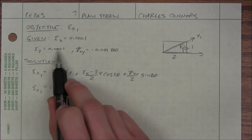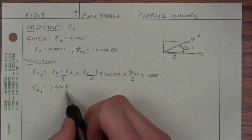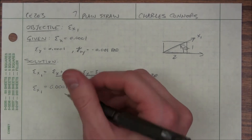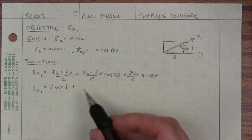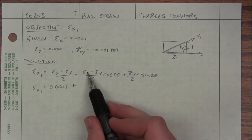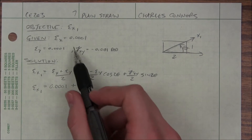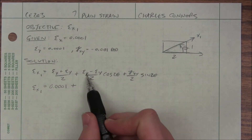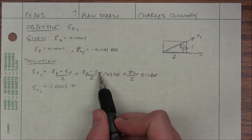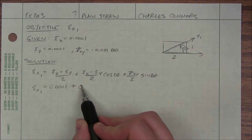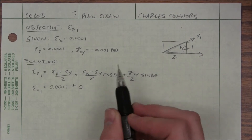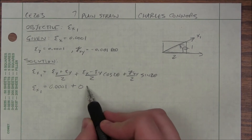I can tell that these values are the same. If I average them, it's going to be the same. Since these are the same, this minus this is going to be zero, so the whole term goes to zero.